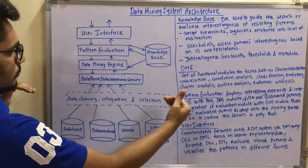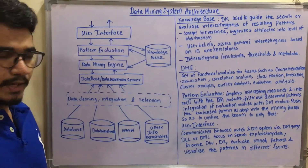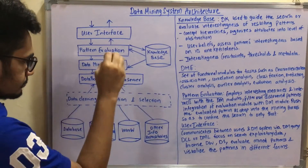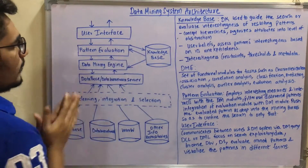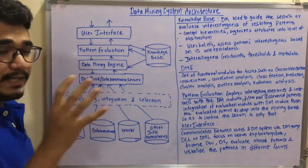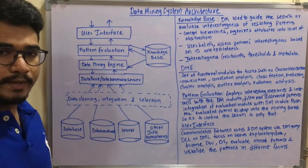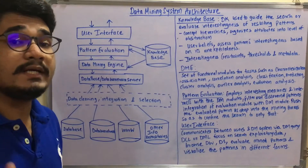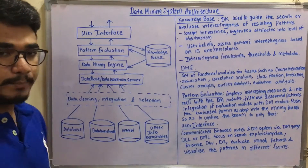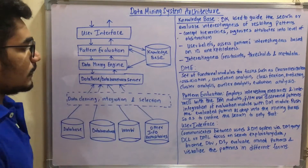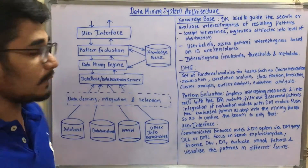Moving to the next level, from the KDD steps we have the data cleaning, integration, and selection activities. Then at a higher layer in the architecture, we have a database or data warehouse server. This server is needed when we perform querying or manipulation activities such as DML or DCL commands.